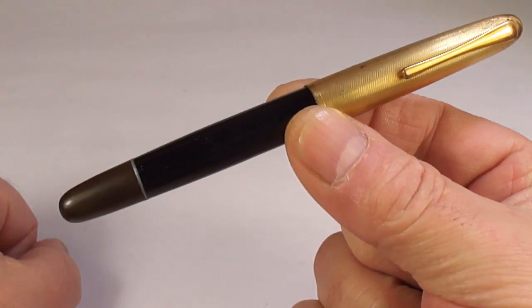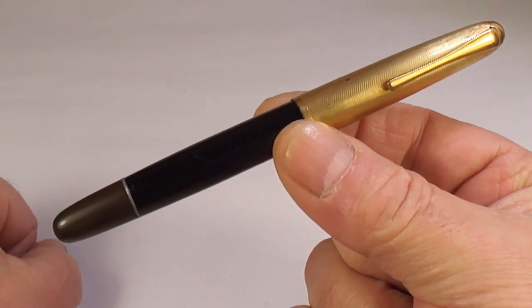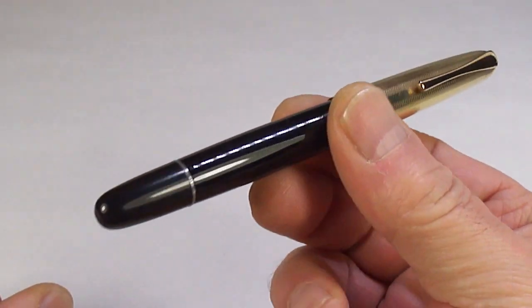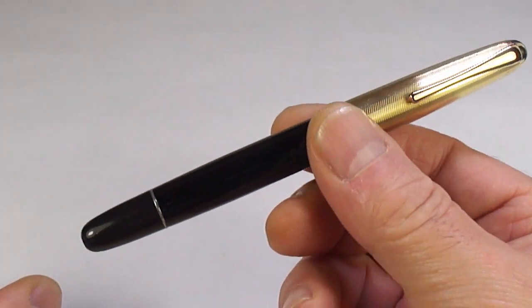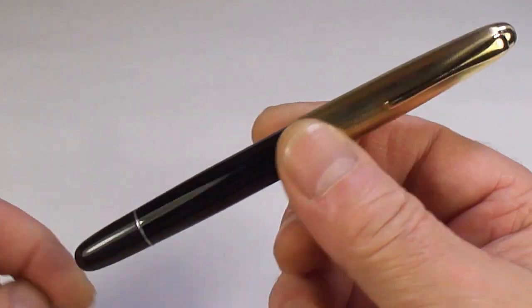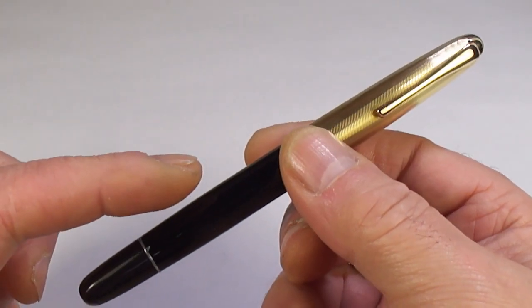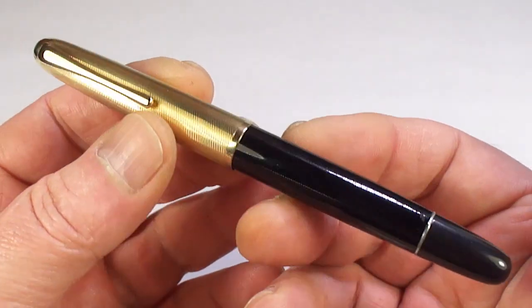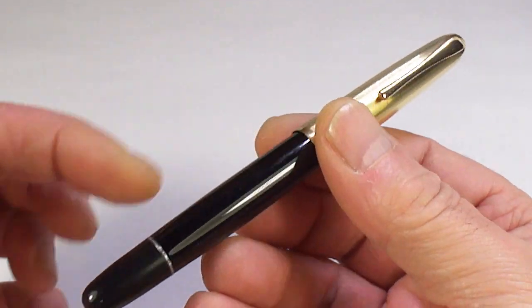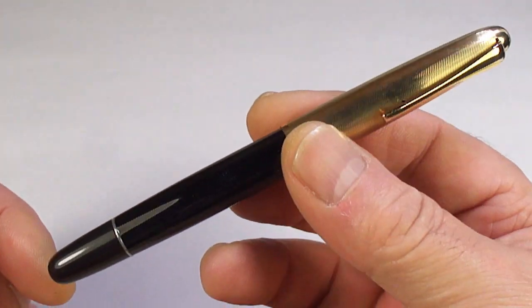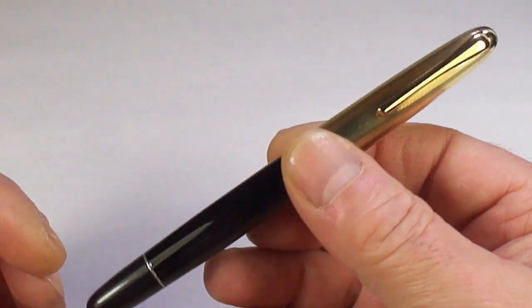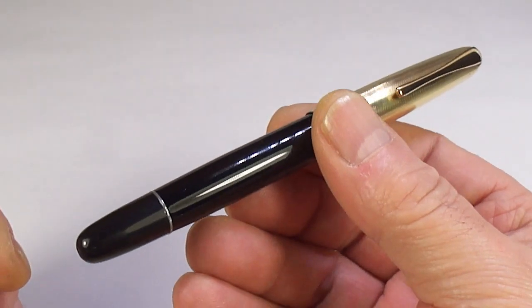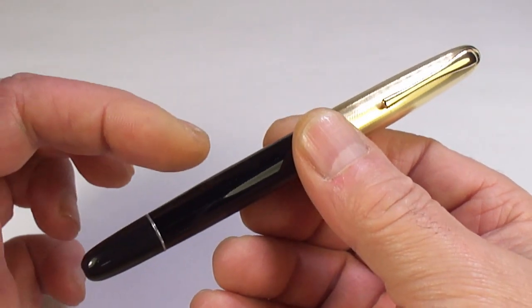So that's before, and this is after. As you can see, looking a little bit nicer than it did before. What I've done is totally disassembled the pen, cleaned everything internally and externally, put a new washer inside on the piston, and everything's been totally cleaned. The pen is ready to go to a new home.